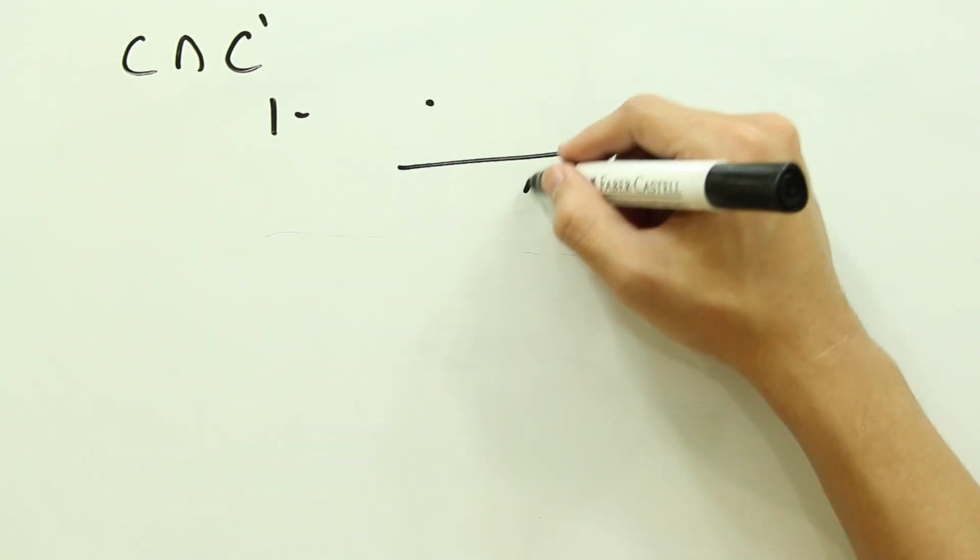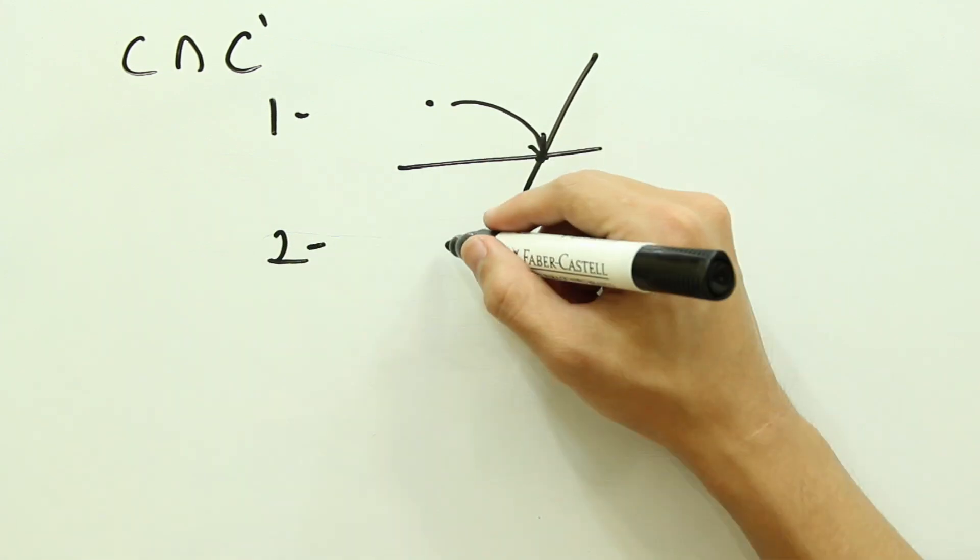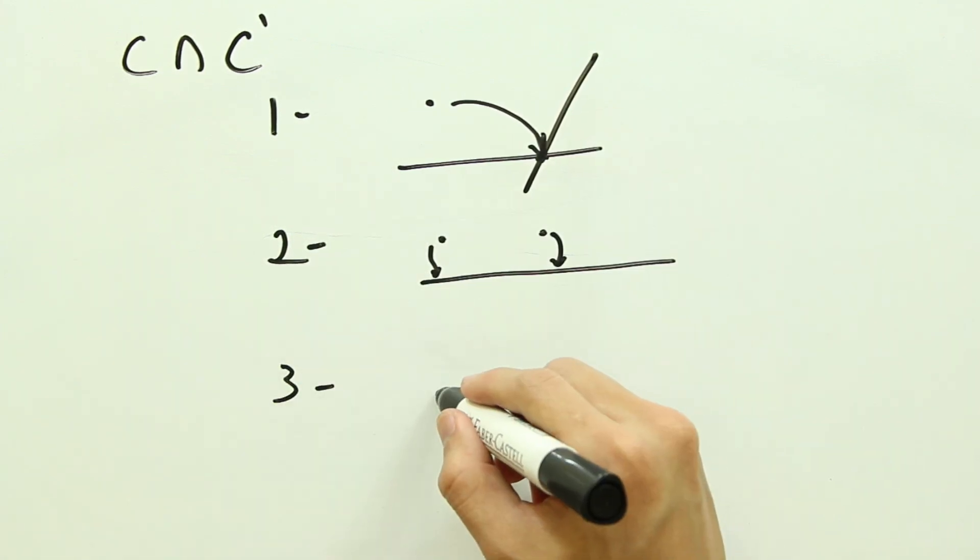First, a fold that places a point onto two non-parallel lines. This fold has a single solution. Second, a fold that places two points onto a line. This fold also has a single solution.